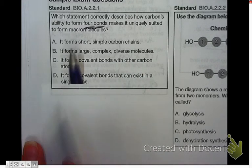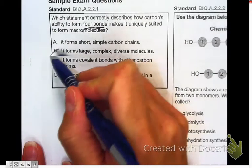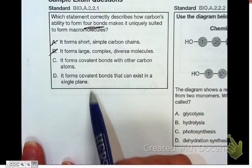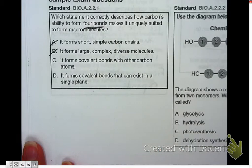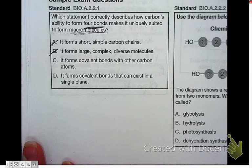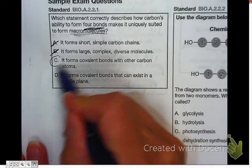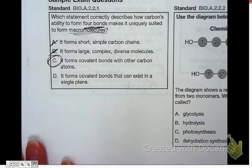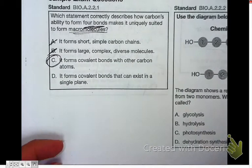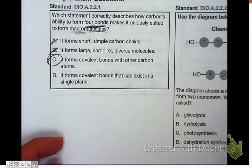And which one of these two things—so we can get rid of these—which one of these two bond answers makes it uniquely suited to form macromolecules? And the answer for that is C, that it can form covalent bonds with other carbon atoms, therefore being able to create these bigger, diverse macromolecules.